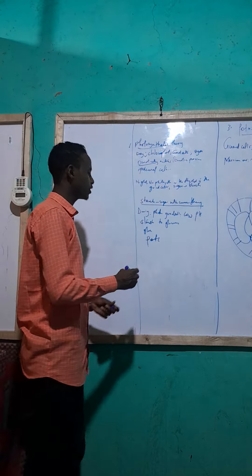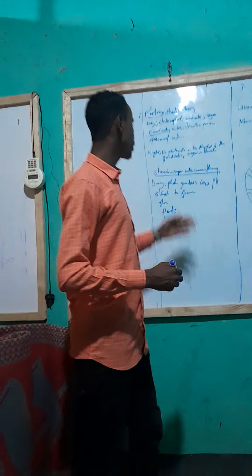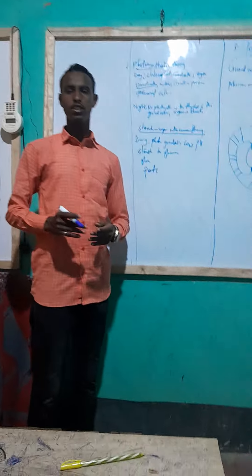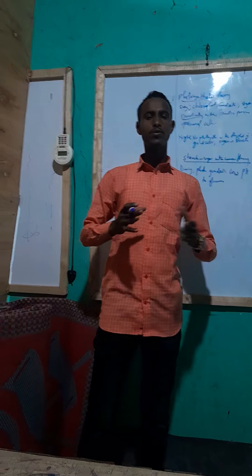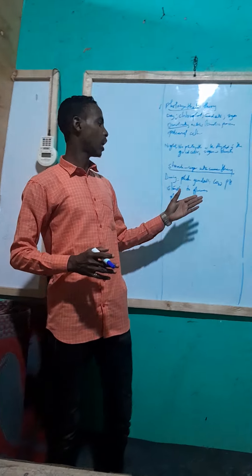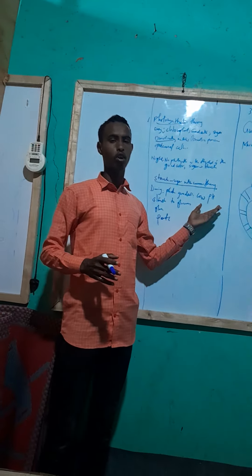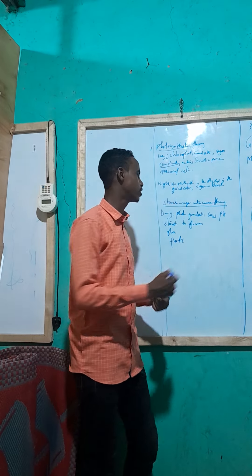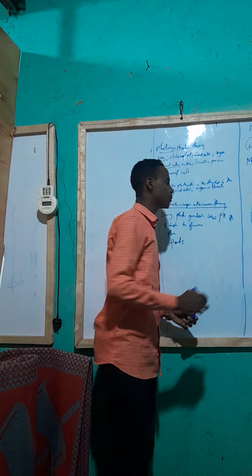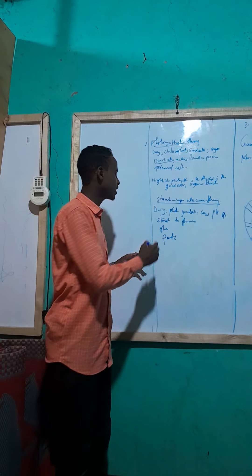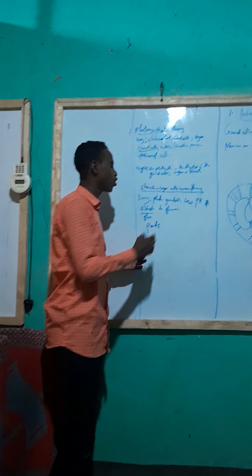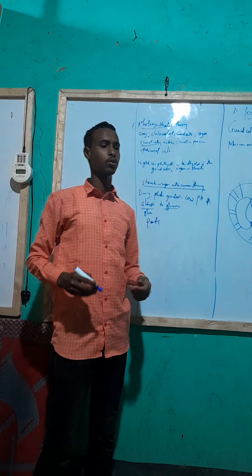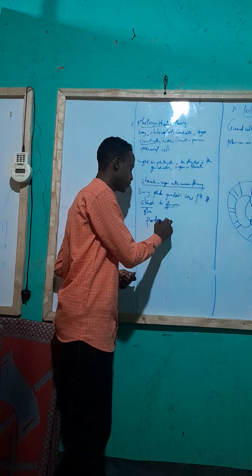The second theory is the starch-sugar interconversion theory. During the day, photosynthesis takes place in the guard cells, and the guard cells absorb carbon dioxide. This absorption of carbon dioxide increases the pH, and once the pH increases the starch is converted to glucose. Glucose is osmotically active.